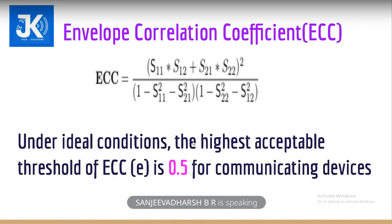The second parameter is envelope correlation coefficient. The formula is: ECC equals the magnitude squared of (S11* × S12 + S21* × S22), divided by (1 − |S11|² − |S21|²) × (1 − |S22|² − |S12|²). Under ideal conditions, the highest acceptable threshold value for ECC is 0.5 for communicating devices.